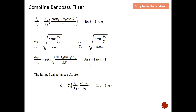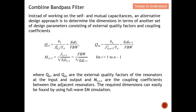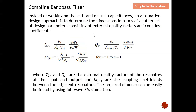These are all the formulas to calculate the comb line band pass filter — they are very tedious. Instead of working with those formulas, we use an alternative design approach: we determine the dimensions in terms of another set of design parameters consisting of the external quality factor and the coupling coefficient. This makes the design formulas much simpler compared to all those formulas.